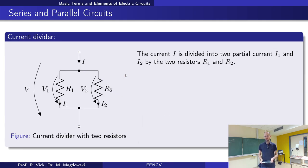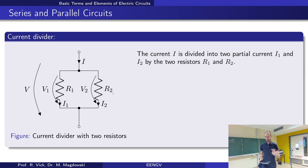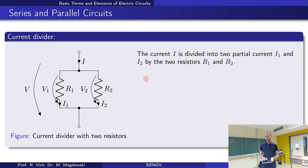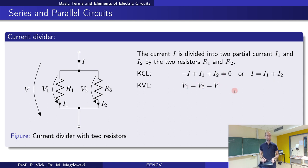If we can do it for voltages, we can also do it for currents. For a current divider, we need two resistors in parallel. The derivation follows the same slides as the voltage divider, except every current is changed to voltage, every voltage to current, Kirchhoff's voltage law is swapped with the current law, and resistance is changed to conductance.